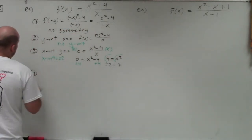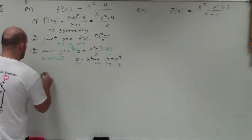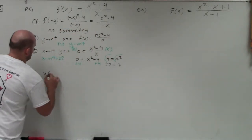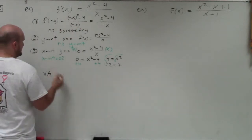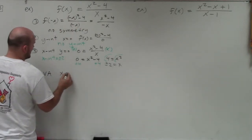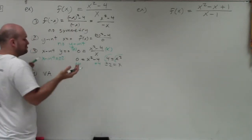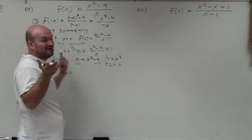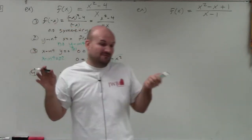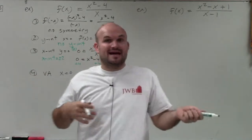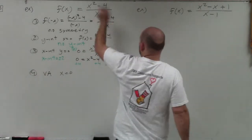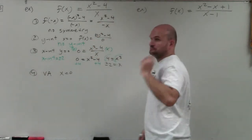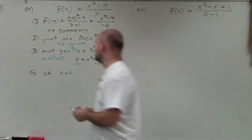The next thing is my vertical asymptote. The vertical asymptote is when my denominator is equal to 0. Here the denominator is just x, so x equals 0. I have a vertical asymptote at x equals 0 because I cannot have 0 in my denominator.